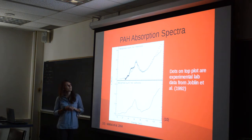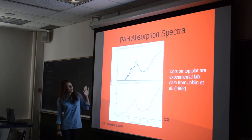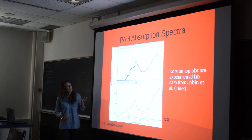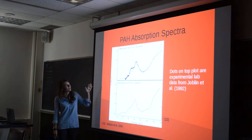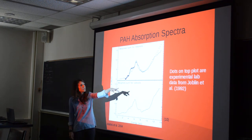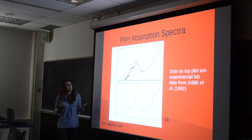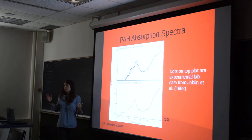This is the PAH absorption spectra. You can see that PAHs prefer a small range of UV waves — these are theoretical models. At about 13.6 electron volts, the PAHs are going to be destroyed, whereas the larger grains can absorb a much wider range of UV radiation.